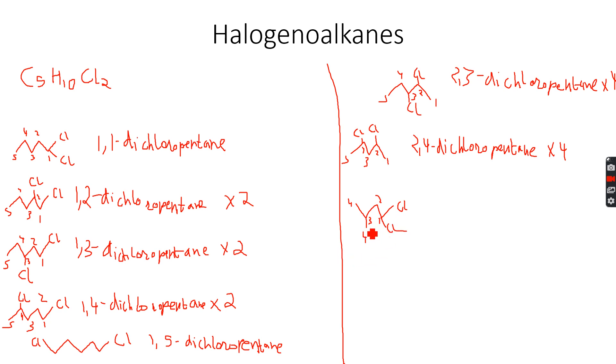And in any case there is a methyl group on the third carbon atom and 2 chlorine atoms on the first carbon atom. So this will become 1,1-dichloro-3-methyl butane because the methyl group is on the third carbon atom, and butane because the longest chain has 4 carbon atoms.